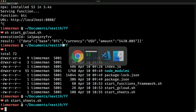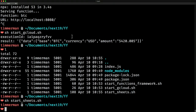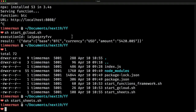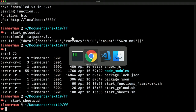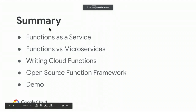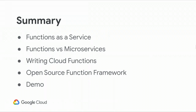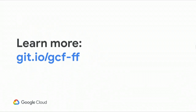Those are three different ways to call your Cloud Function: from the command line, from a browser, and from Google Sheets. In summary, we covered what functions as a service is, functions versus microservices, writing Google Cloud Functions, the open source Functions Framework, and a demo of three ways to call Cloud Functions. You can learn more about the Functions Framework at the GitHub link.